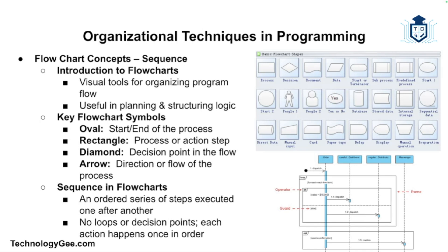Let's move on to flowcharts, which are a visual method for organizing the flow of a program. Flowcharts use diagrams to represent the sequence of steps in a process, making them an essential tool in the planning phase of development. We have various flowchart symbols: the oval represents start and end points, the rectangle represents a process or action, the diamond represents a decision point, and arrows indicate the flow or direction of the process.